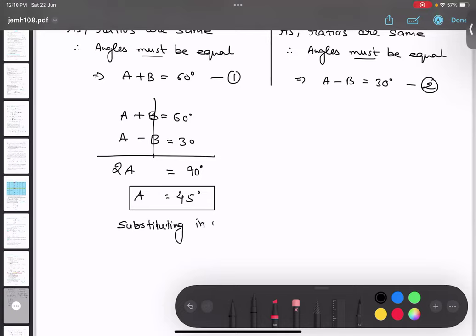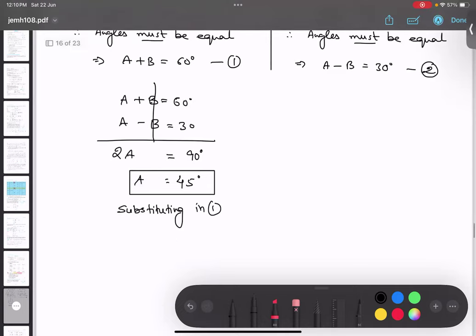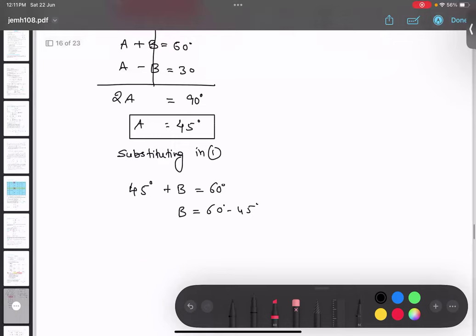Substituting in first equation or second equation, I can put in any equation. So 45 degree plus B equals 60 degree. I am putting in this equation, so B equals 60 minus 45, so B equals 15 degree.